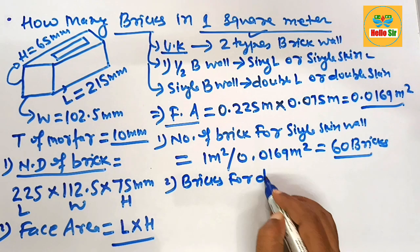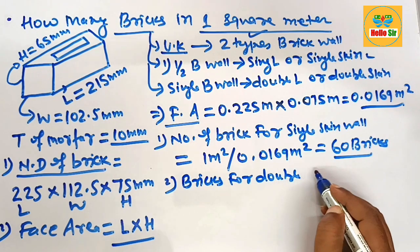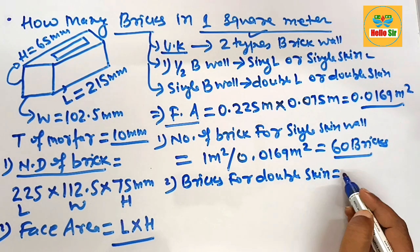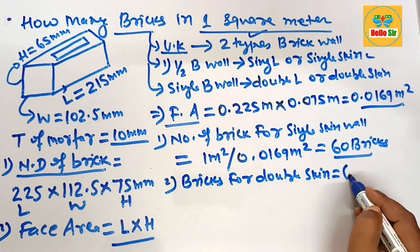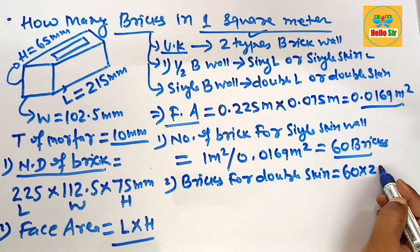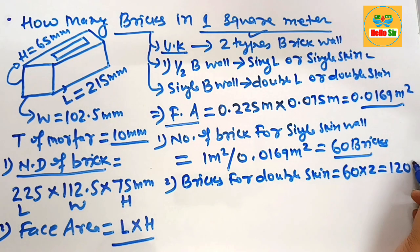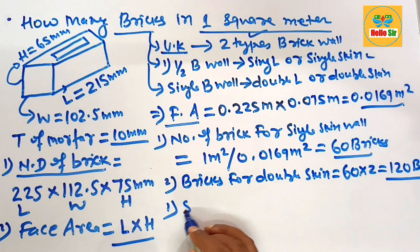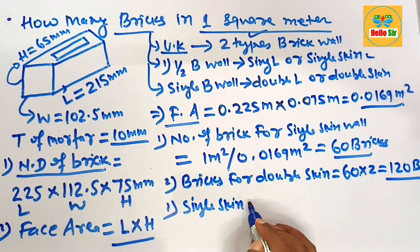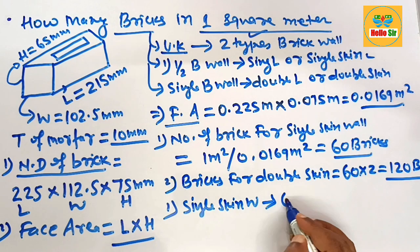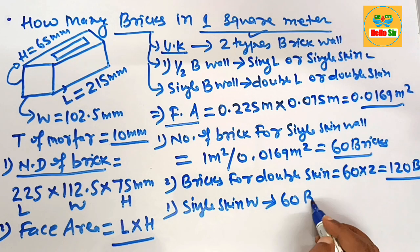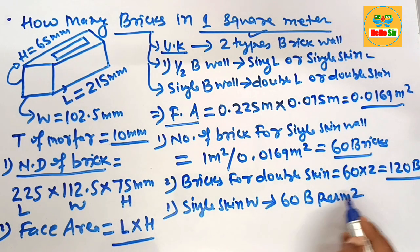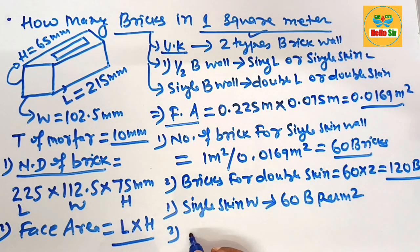Now calculate the bricks for a double skin wall. For a double skin wall, you multiply 60 by 2, which gives 120 bricks per square meter. Thank you.